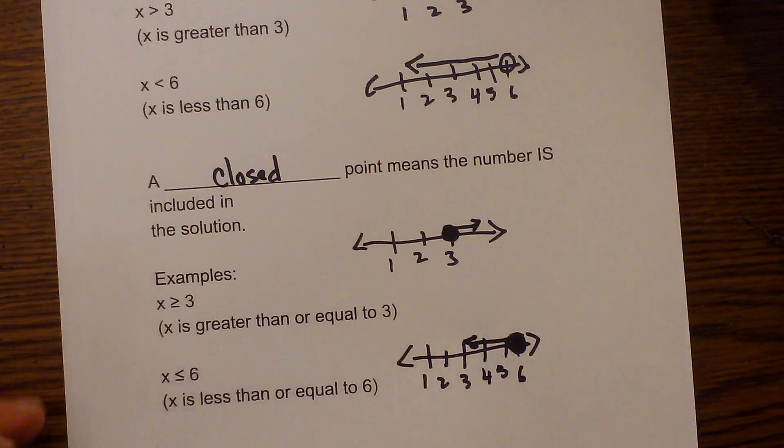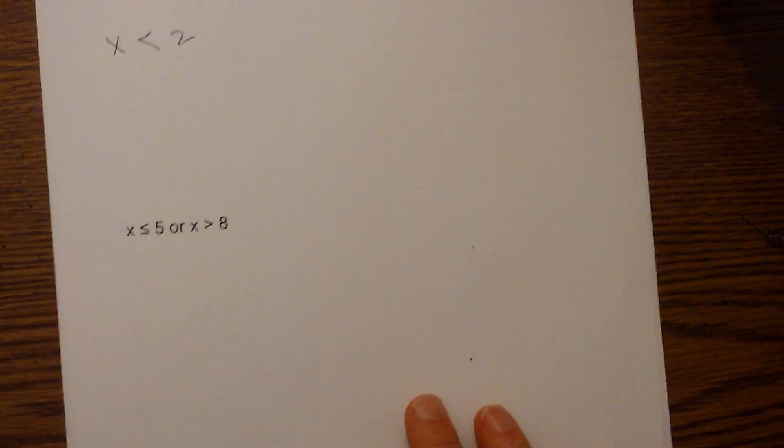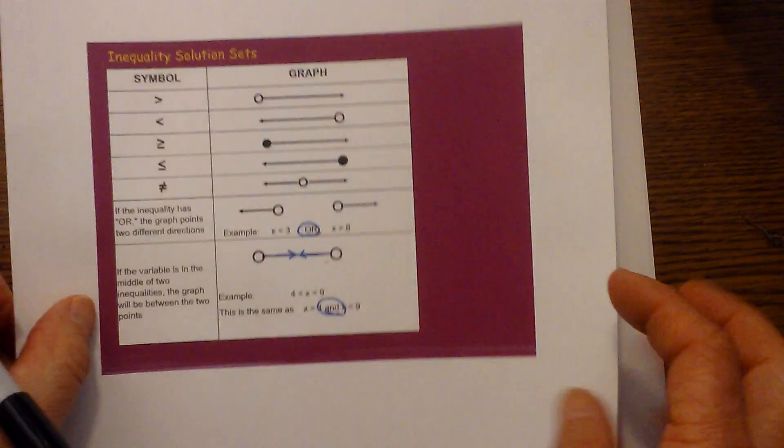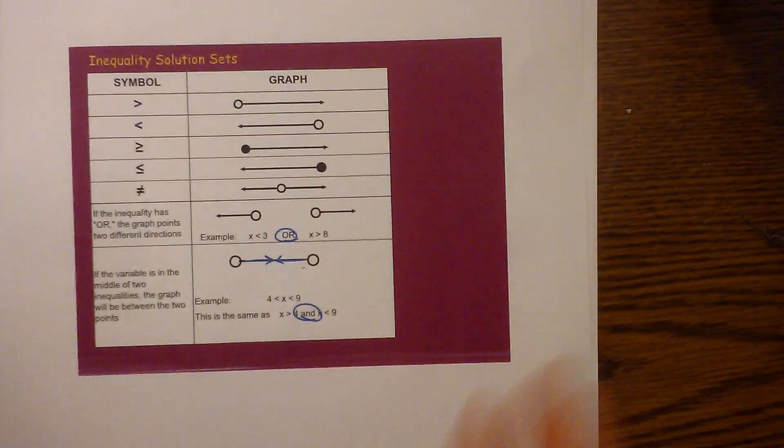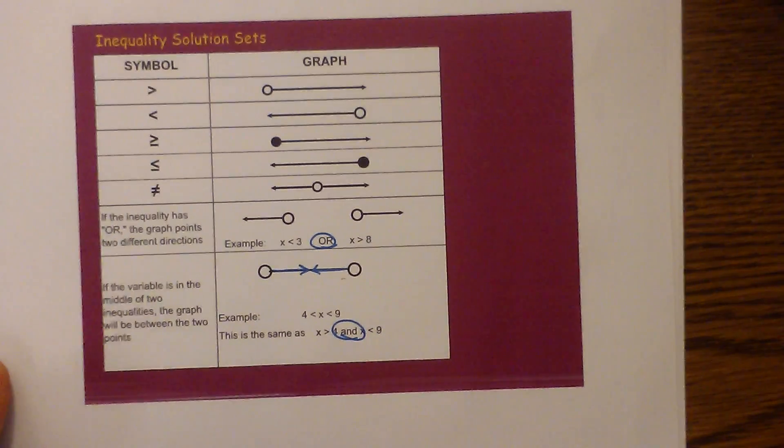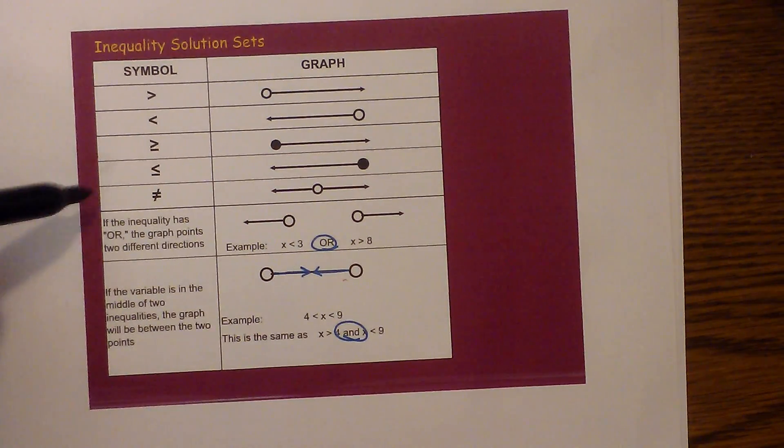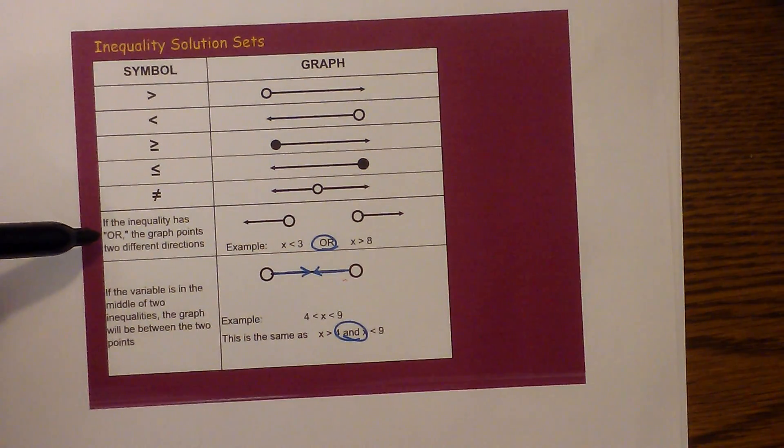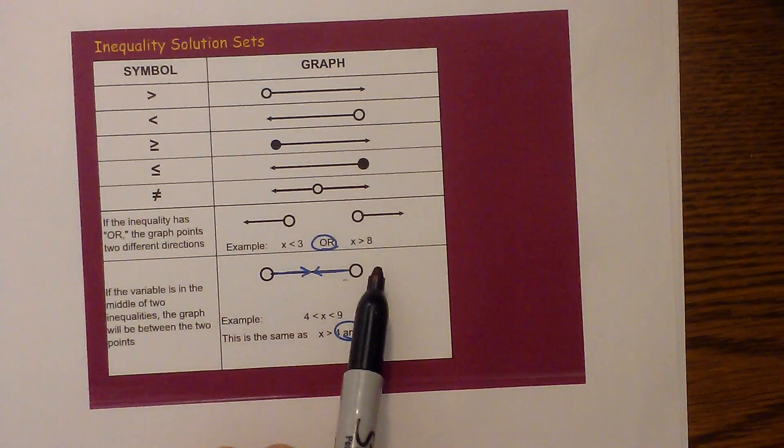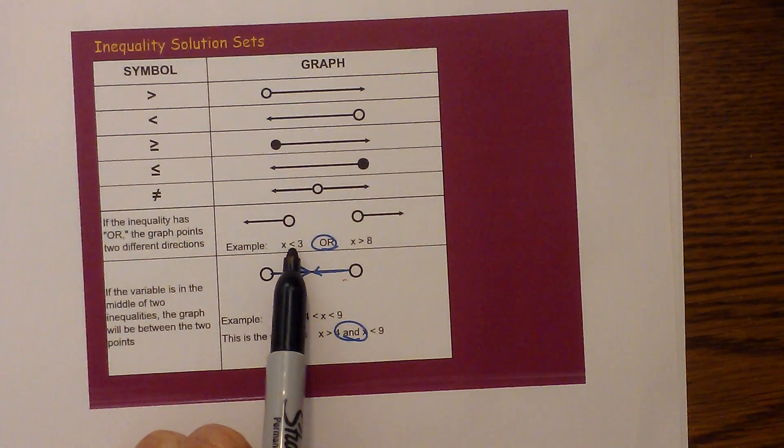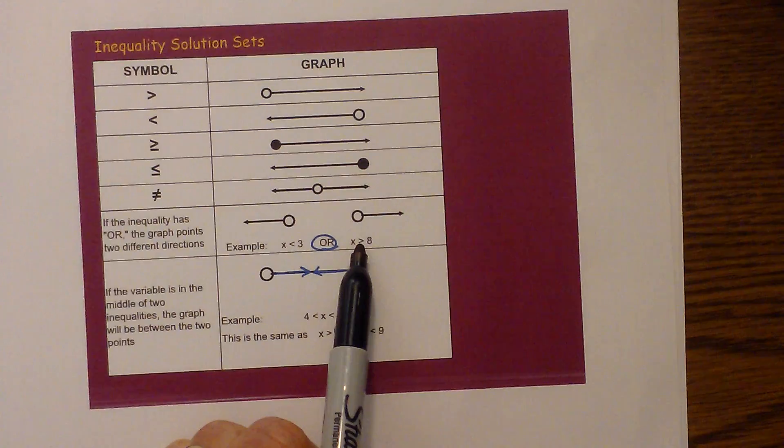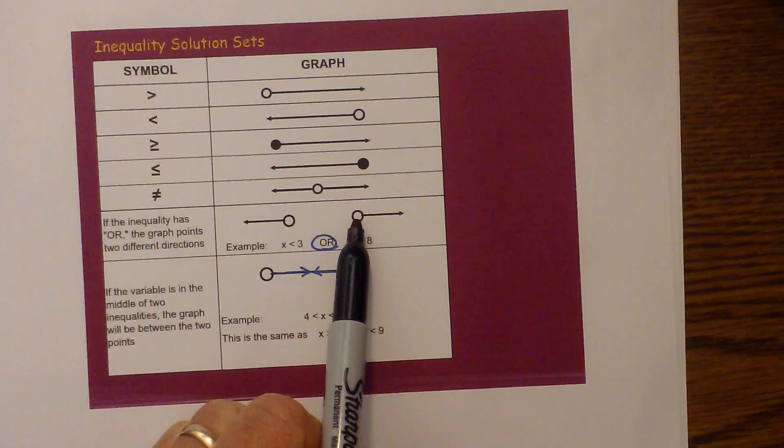So let's look at a couple other examples you may encounter. I have a sheet with some of those. You may encounter this where you have OR, if the inequality has OR, the graph points in two different directions. Notice how we have less than, so it is open, and we have greater than 8, so it is open.